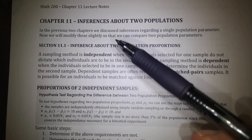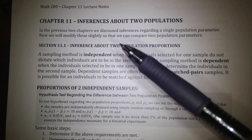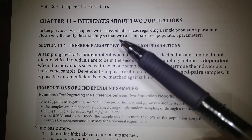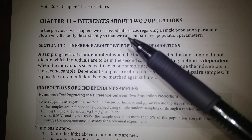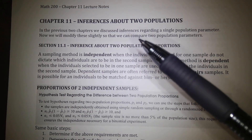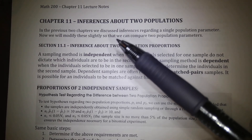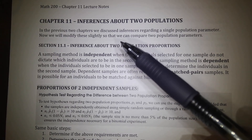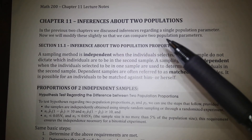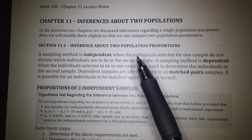In this chapter, Chapter 11, we're going to be discussing two different populations and comparing whether they have similar or not similar characteristics. In the previous two chapters we discussed inferences regarding a single population parameter, but now we're going to modify these slightly so that we can compare two population parameters.